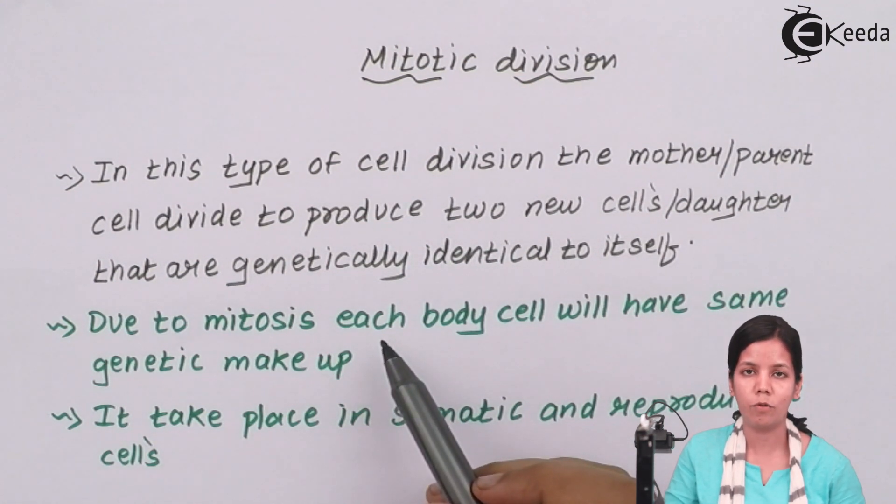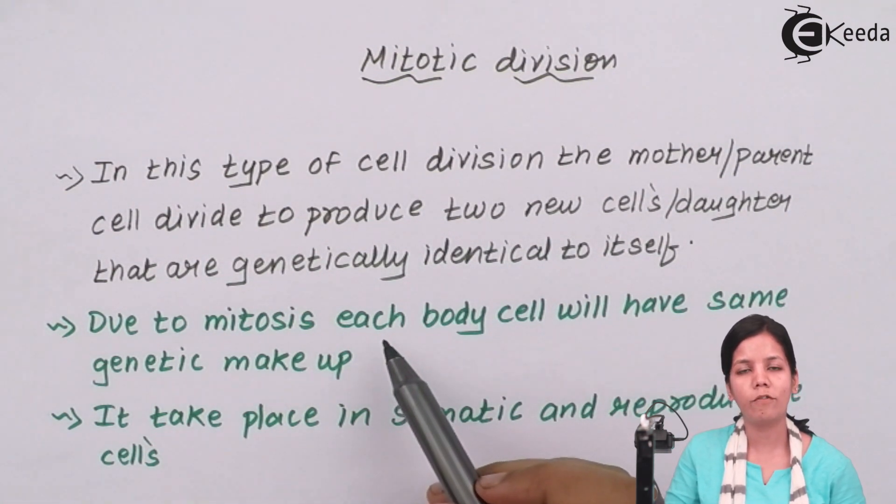If there are 46 number of chromosomes, the daughter will have 46. If there are 2N number of chromosomes in parent, then the daughter will have 2N number of chromosomes inside itself.